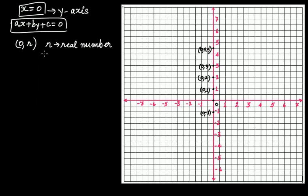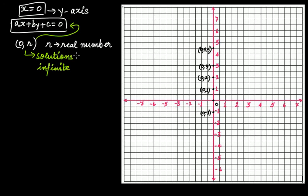Since all the points of the form (0, r) lie on the y-axis, they will be solutions of the equation of the y-axis, and such points are infinite in quantity. The equation we are looking for is x = 0. We can write this as x + 0·y + 0 = 0.